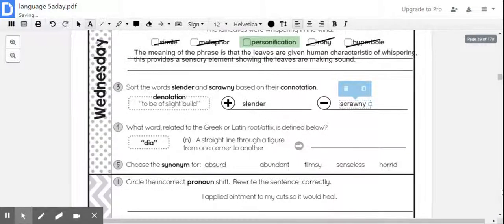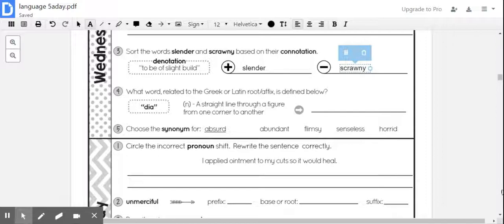And number four. It says what word related to the Greek or Latin root or affix is defined below. Okay. So it says the affix that they're using is di. And the definition is a straight line through a figure from one corner to another. Okay. So the word that we're looking for here is diagonal.